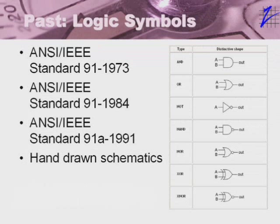This next slide shows what you probably recognize as the standard symbols for digital logic design. On the right-hand side you'll see the symbol for the AND gate, OR gate, the inverter, the NAND, the NOR, the exclusive OR, and the exclusive NOR. On the left side, you'll see some of the standards developed by ANSI and the IEEE to standardize these symbols. These are symbols that digital electronic engineers have used for many years, starting from standardization at least in 1973.